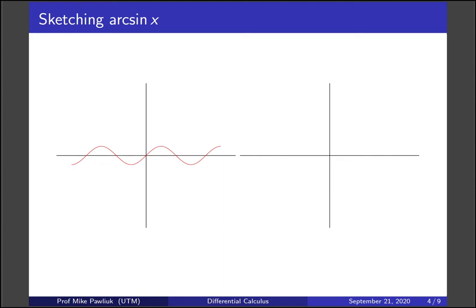Now, in order to draw arcsine, we need to reflect it. Specifically, we need to reflect it across the line y equals x. Now, I think this is a challenging thing for some people. So rather than go ahead and reflect it and maybe get the bumps wrong, I like to first take a horizontal line that I understand. So let's take the horizontal line y equals 1.